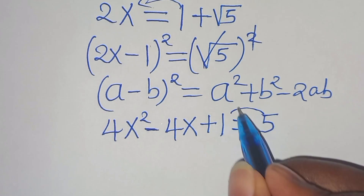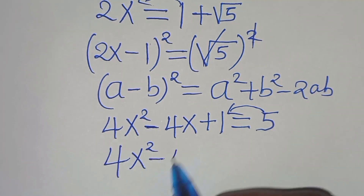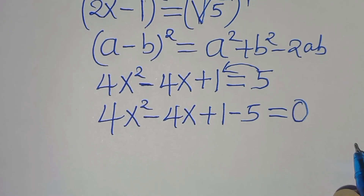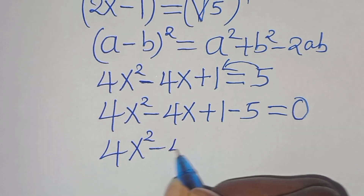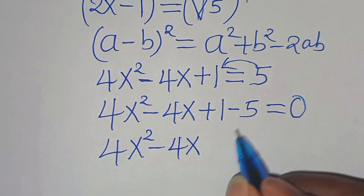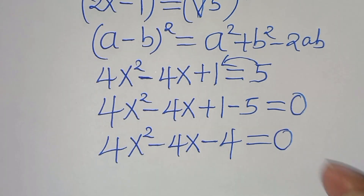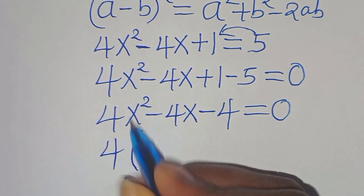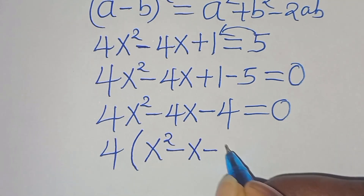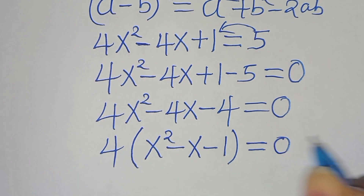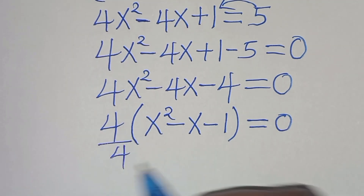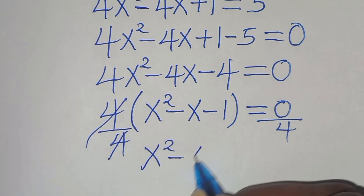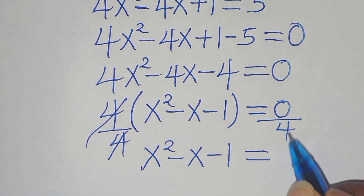The next step is to take 5 on the left hand side, so that we have 4x squared minus 4x plus 1 minus 5 equals 0. This simplifies to 4x squared minus 4x minus 4 equals 0. We can factor out 4, so that we have 4 times x squared minus x minus 1 equals 0, which means x squared minus x minus 1 equals 0.